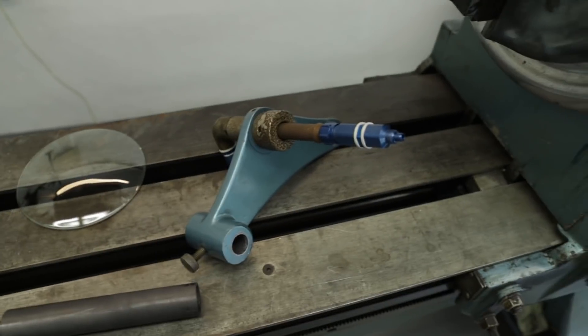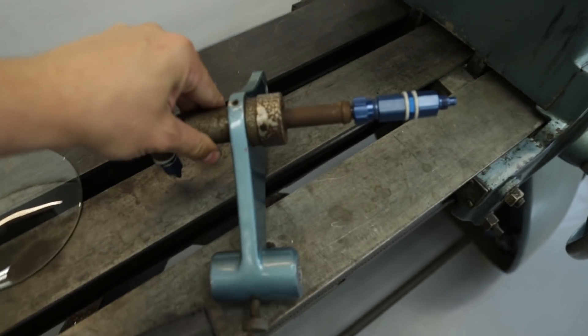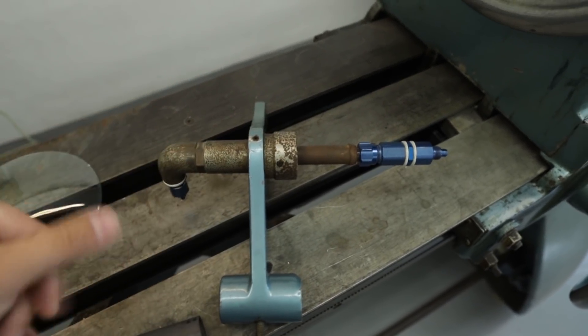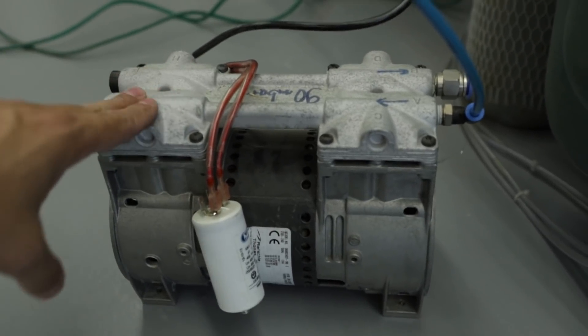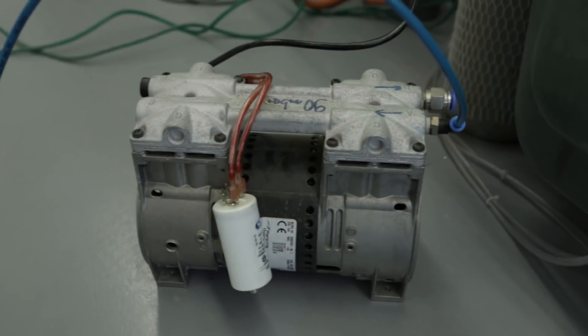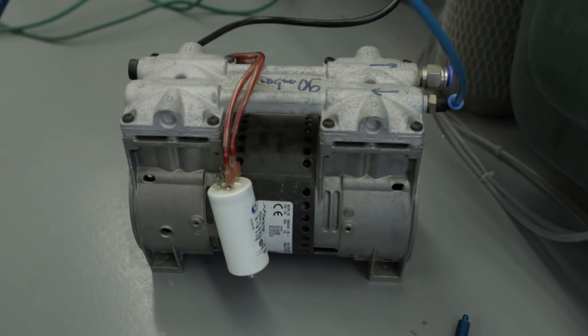I will use a swivel for glass lathes which is used for blowing air into the glass, so it works also for the vacuum. As a source of vacuum I will use this little compressor which is removed from an oxygen concentrator.